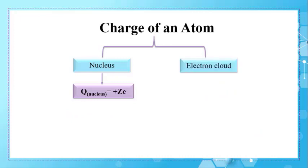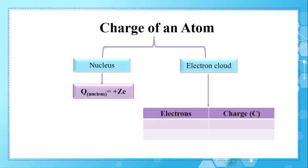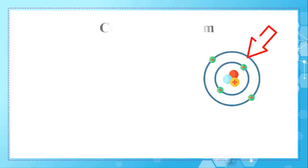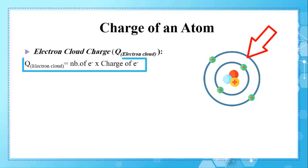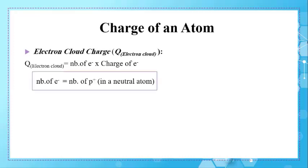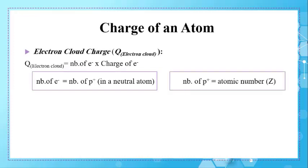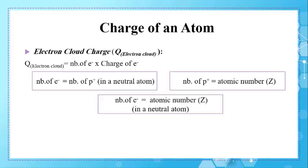Now let's move to the electron cloud. The charge of the electron cloud depends on the electrons. If one electron has a charge of −E, then three electrons have a charge of −3E. To calculate the charge of the electron cloud, use the formula: number of electrons multiplied by the charge of an electron. In a neutral atom, the number of electrons equals the number of protons, which equals the atomic number Z. Replacing in the formula gives Q_electron cloud = −ZE.